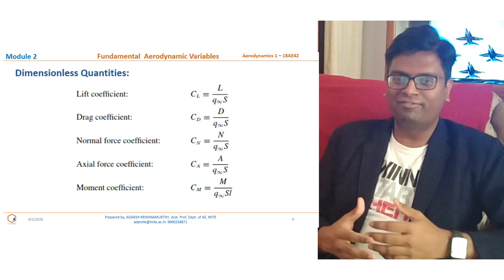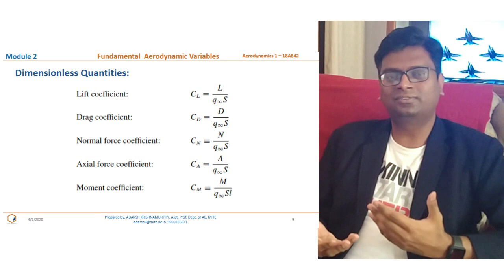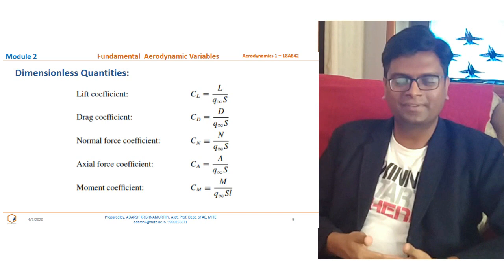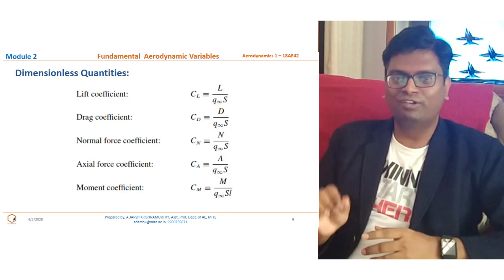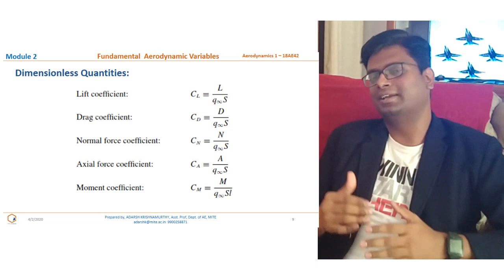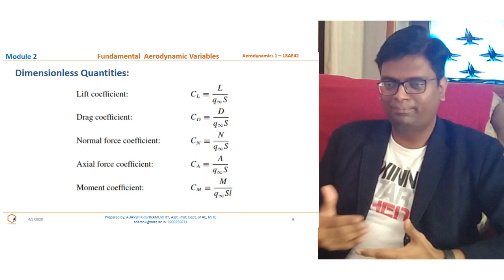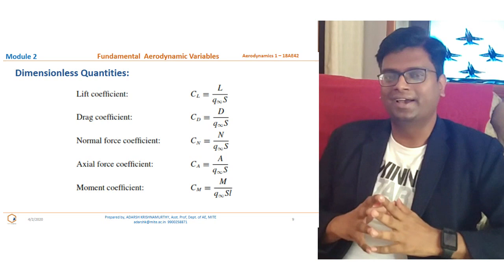Similarly, the normal force coefficient CN and axial force coefficient CA follow the same definition. The moment coefficient CM is the ratio of net moment divided by the product of dynamic pressure, planform area, and total chord length. These are the dimensionless quantities we will use throughout the study of aerodynamics.